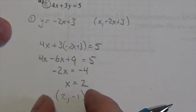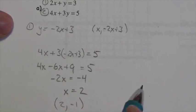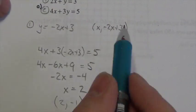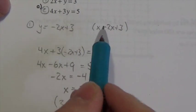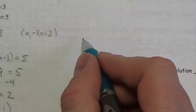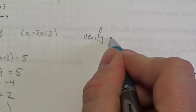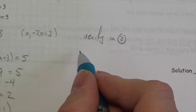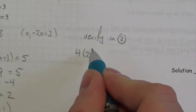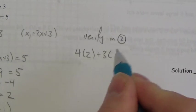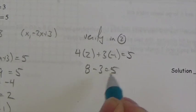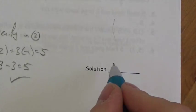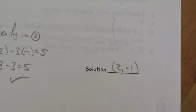Now I need to verify that that point actually works. I used equation one to get my y-coordinate, so I already know it works in equation one. I'm going to verify in equation two. That will be 4 times 2 plus 3 times negative 1 equals 5. Is 8 minus 3 equal to 5? Yes, it is. So the solution here is the point (2, -1).